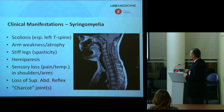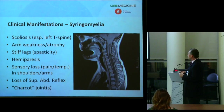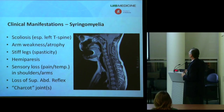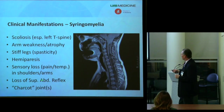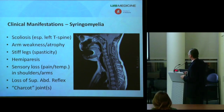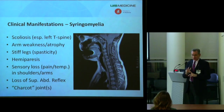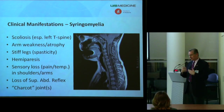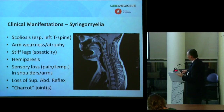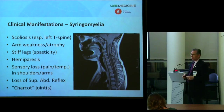Syringomyelia can cause weakness and loss of muscle mass in the arms, increased tone or spasticity in the legs, and weakness on one side of the body. One classic presentation is loss of pain and temperature sensation in a cape-like distribution across the shoulders and upper arms. Orthopedic surgeons routinely look for the abdominal reflex in scoliosis referrals. In really advanced long-standing cases, patients can develop Charcot joints — in the shoulder, knee, or hip — because lost sensation allows damage to accumulate until the joint wears out.